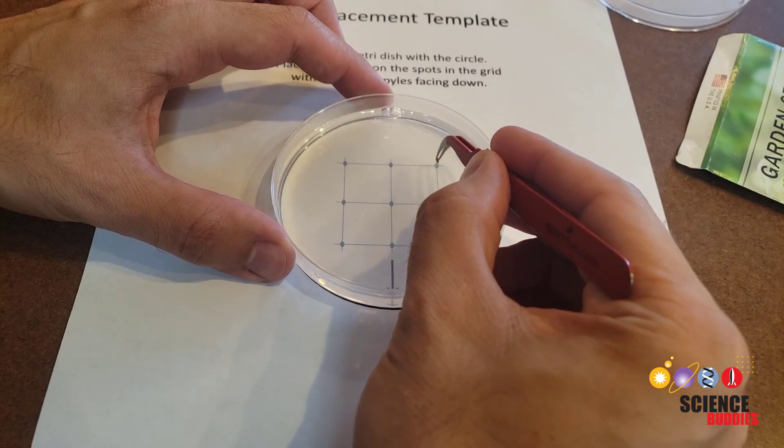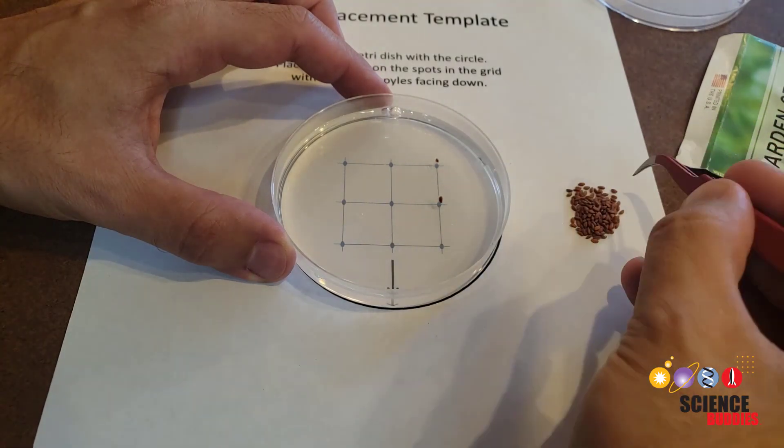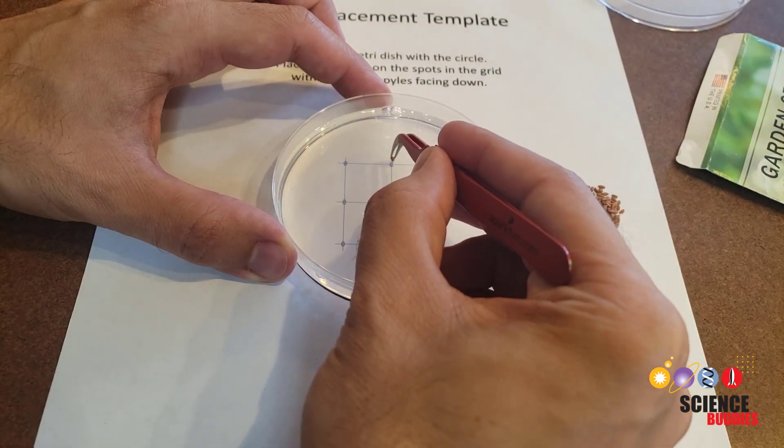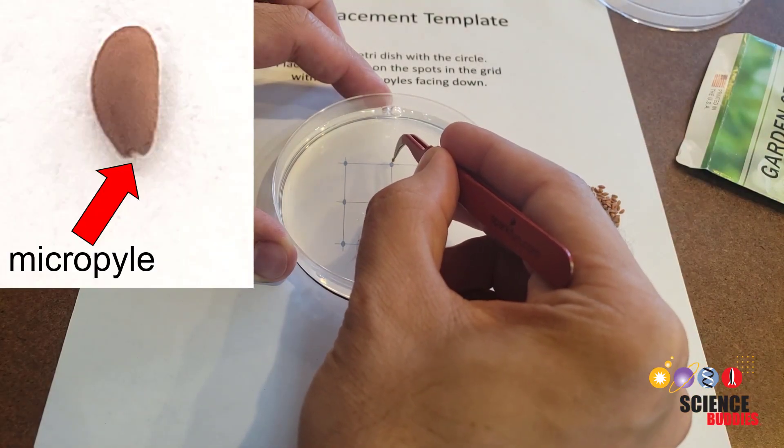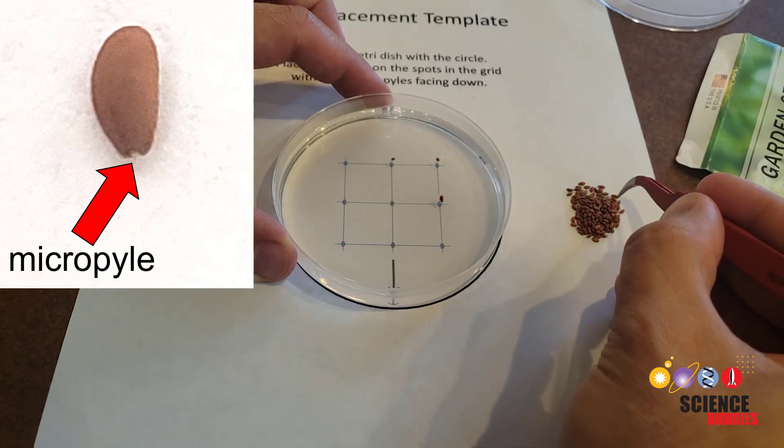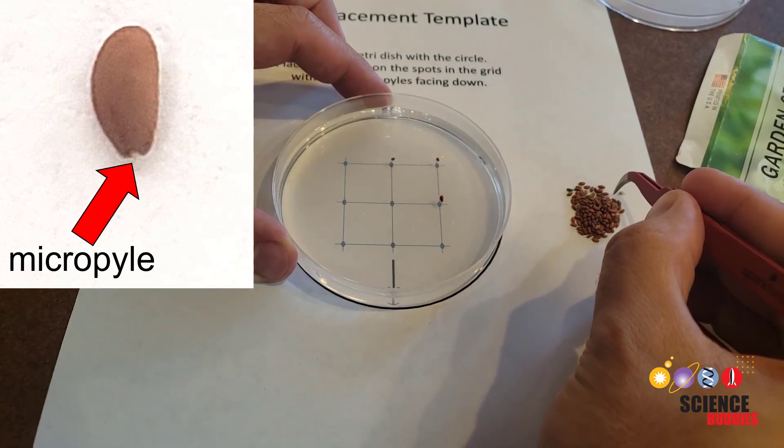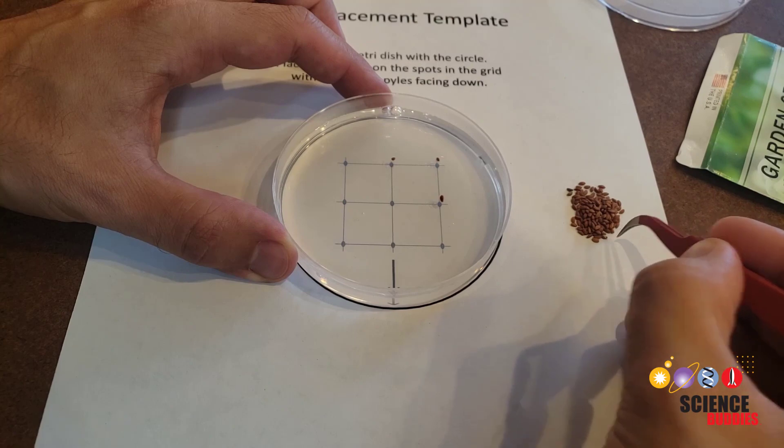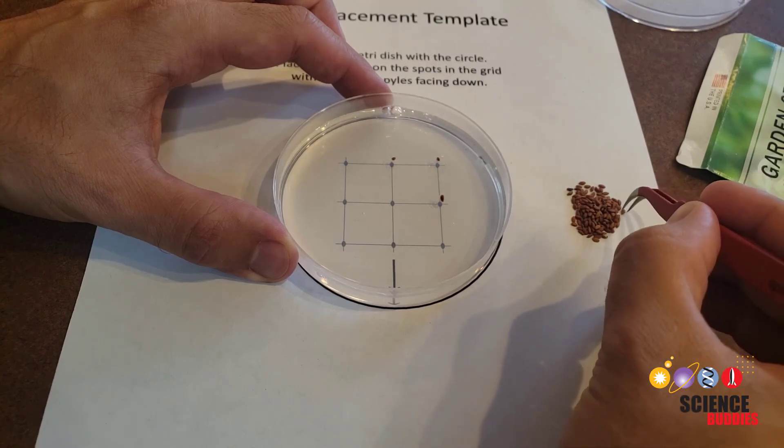It may be important to keep seed orientation consistent for your experiment. You can use the arrow on the seed placement template to make sure your seed's micropiles all point in the same direction. The micropile is the part where the seed splits when it germinates. If the micropiles are too small to see with your naked eye, you may need a magnifying glass.